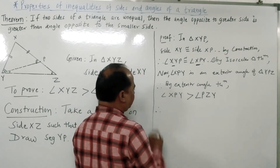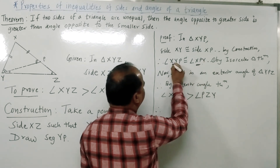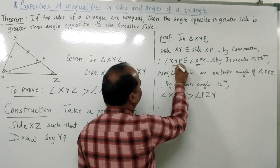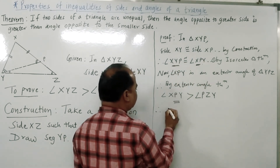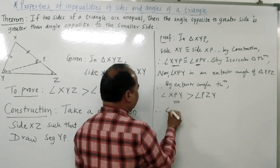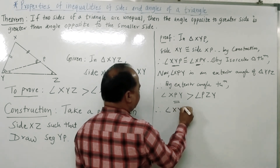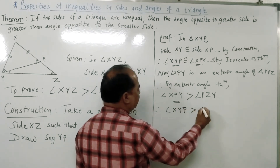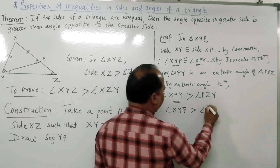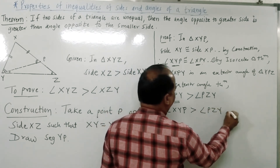Therefore, since angle XPY is equal to angle XYP from statement one, we have angle XYP is greater than angle PZY.